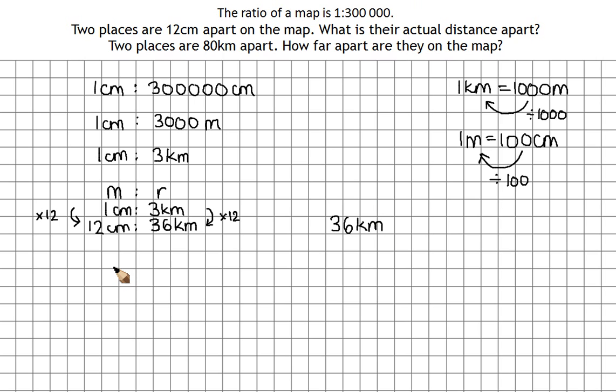Now let's have a look at part 2. Two places are 80 kilometers apart in real life. So again, I'm going to set it up with my map to real. 1 centimeter is 3 kilometers as we worked out in the first bit.